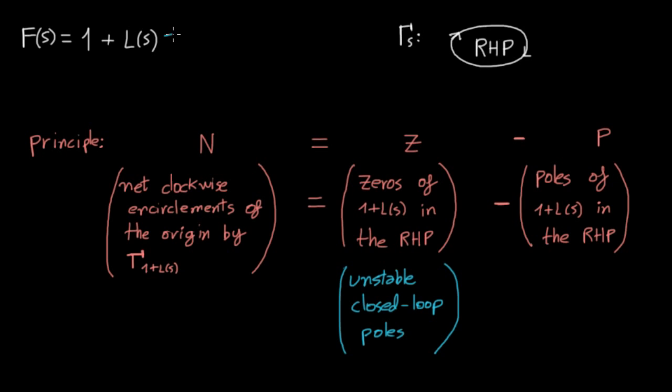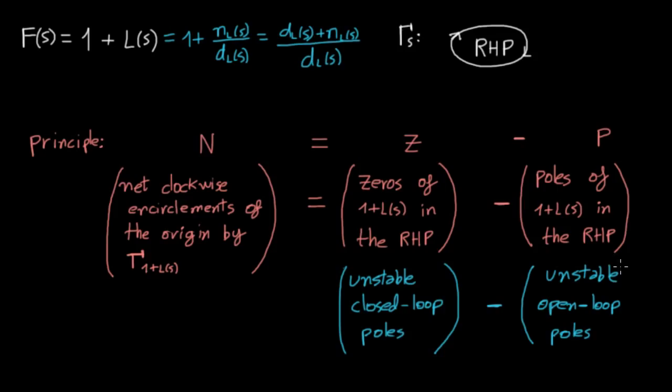On the other hand, 1 plus L can be written as 1 plus the numerator of L over the denominator of L, which is equal to the denominator plus the numerator over the denominator. So, as you see, the poles of 1 plus L are no other than the poles of L. Therefore, in this scenario, p is the number of unstable open-loop poles, which is known.